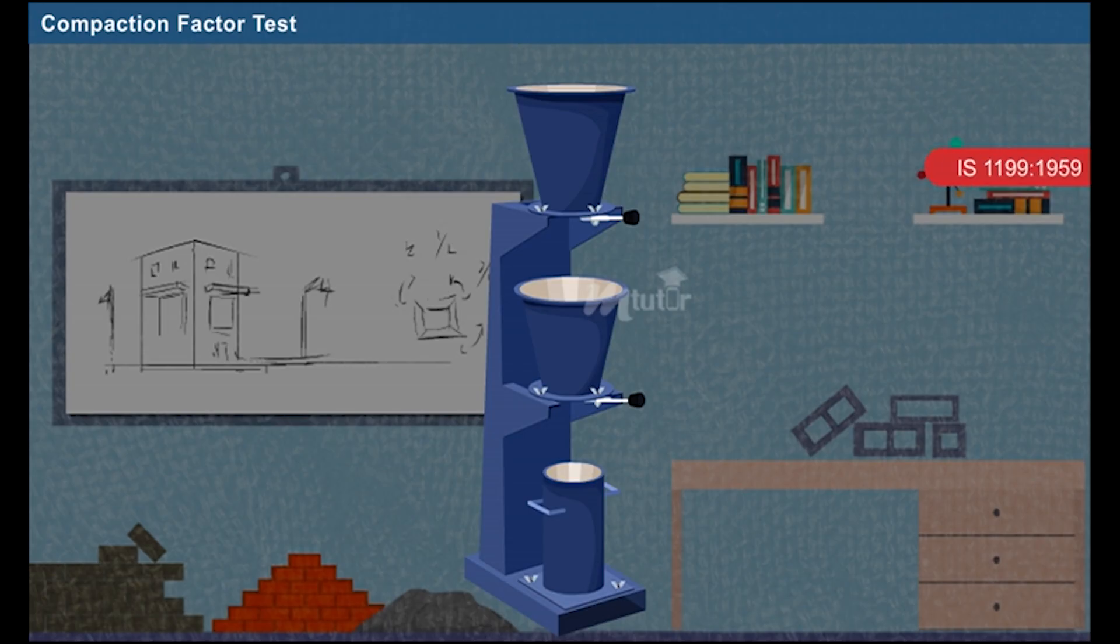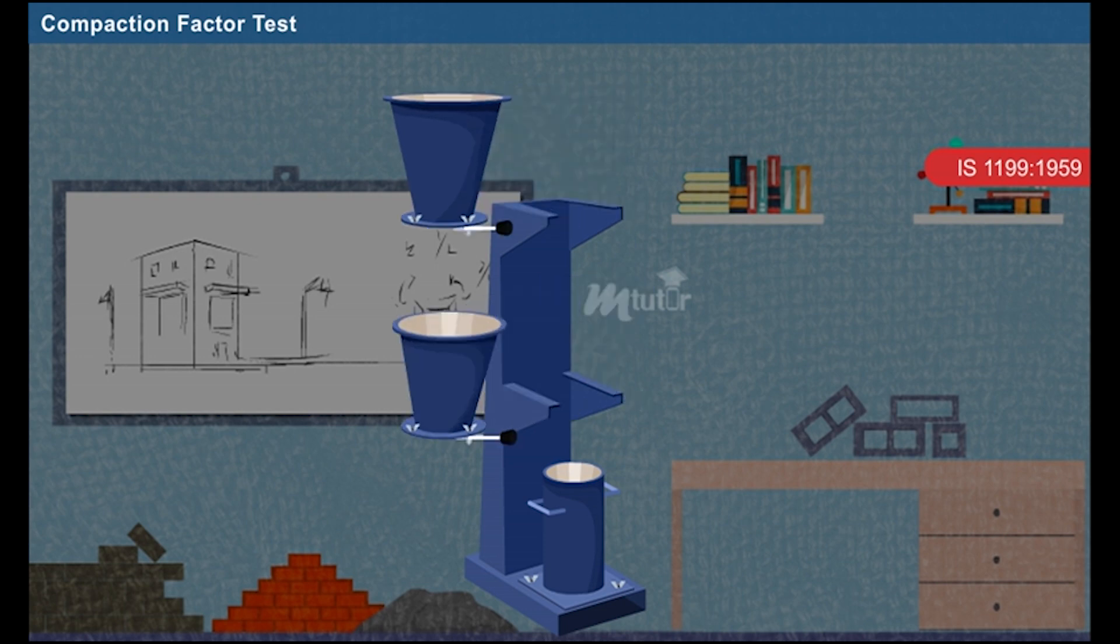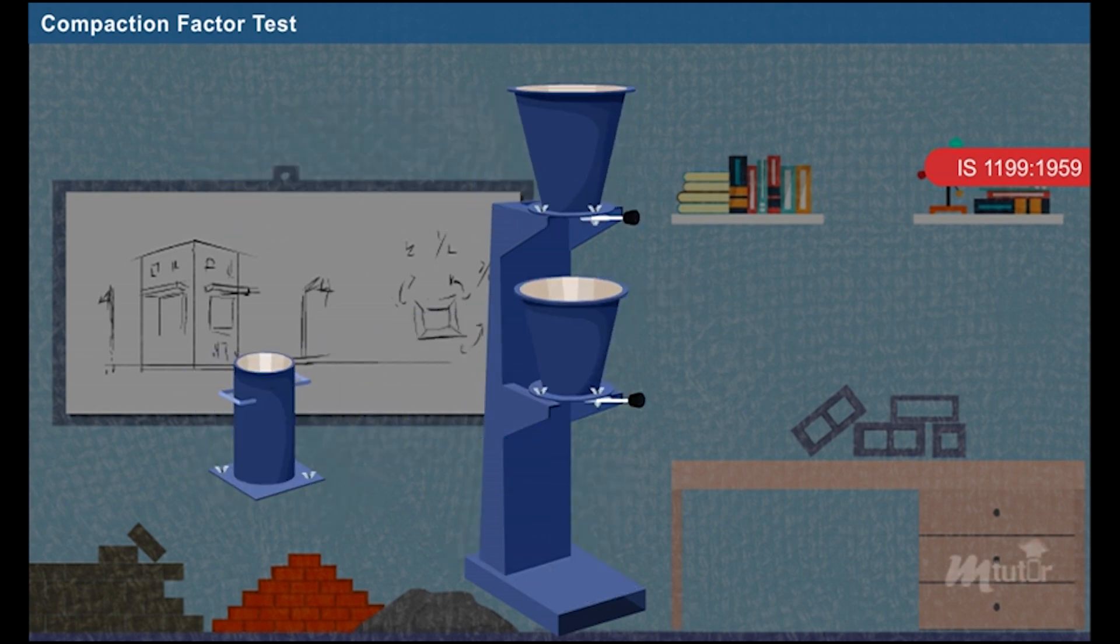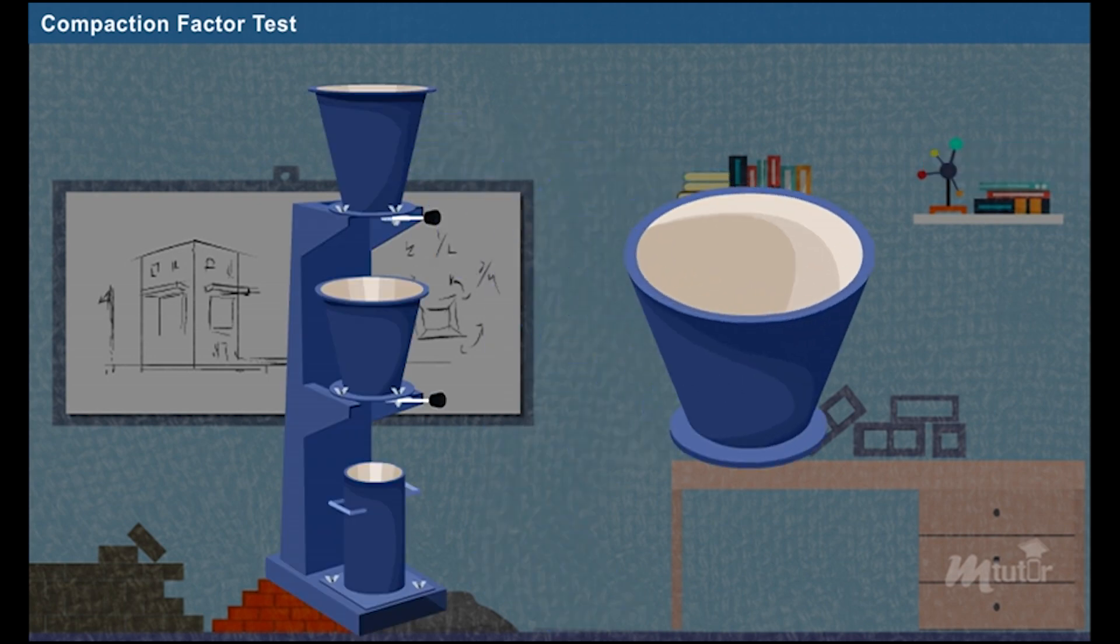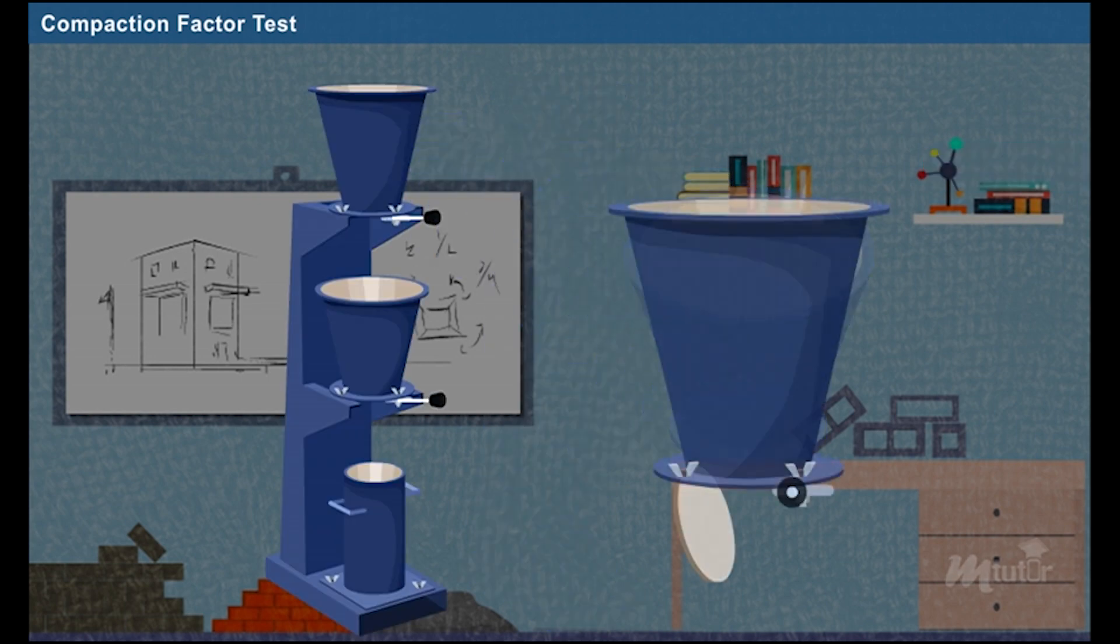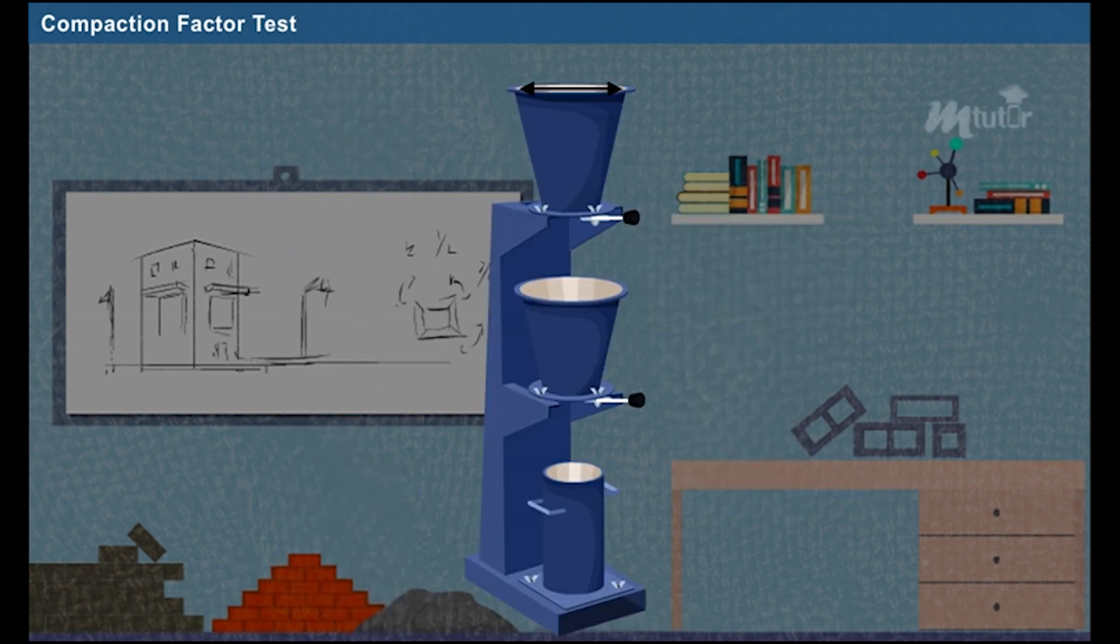As per IS-119-1959, compaction factor test apparatus consists of two conical hoppers and a bottom cylinder. The inner surface of the conical hoppers is smooth and attached to the trap doors. The upper hopper's top internal diameter is 254 mm, bottom internal diameter is 127 mm and internal height is 279 mm.